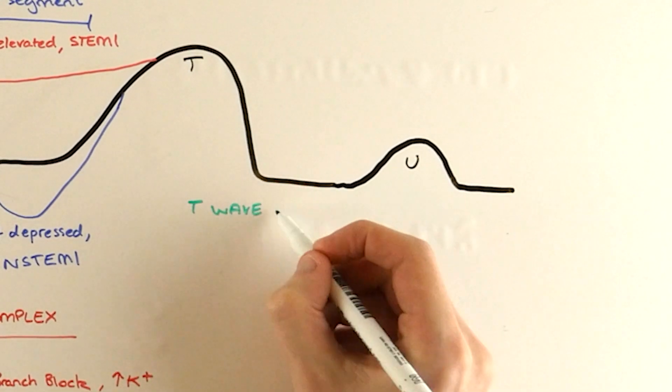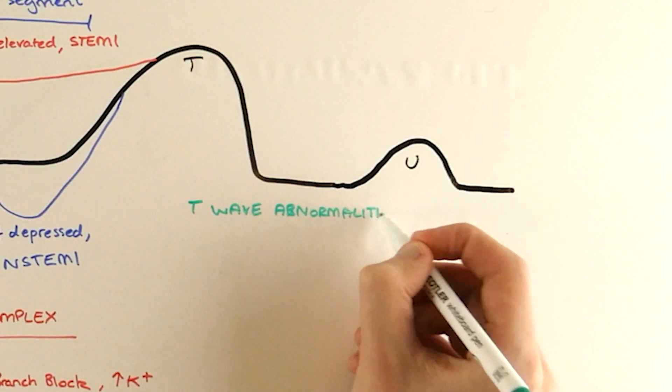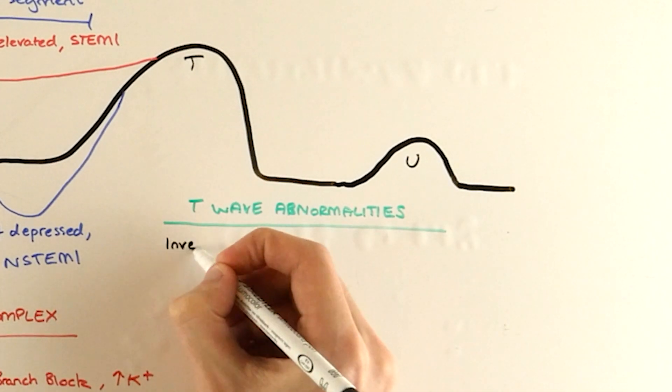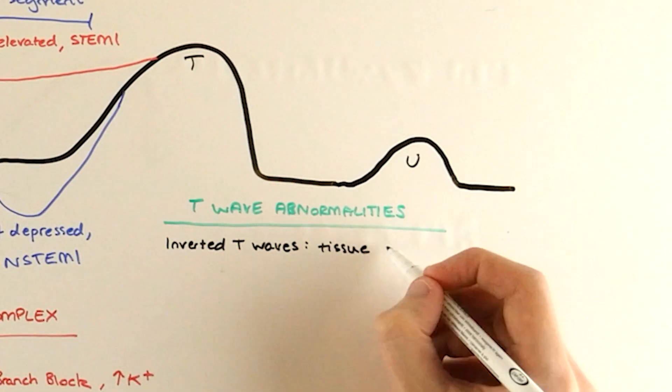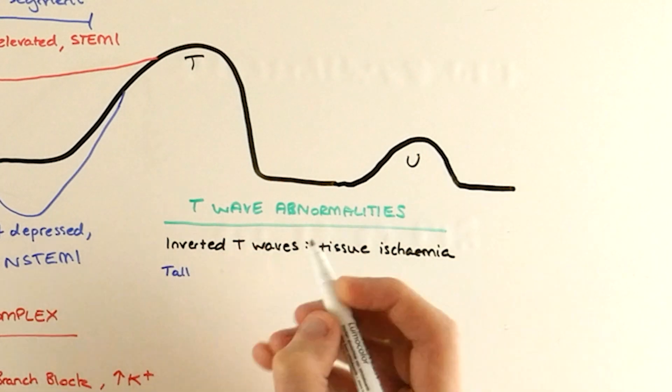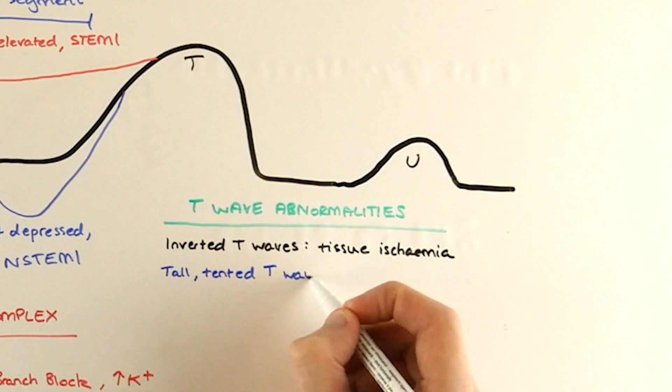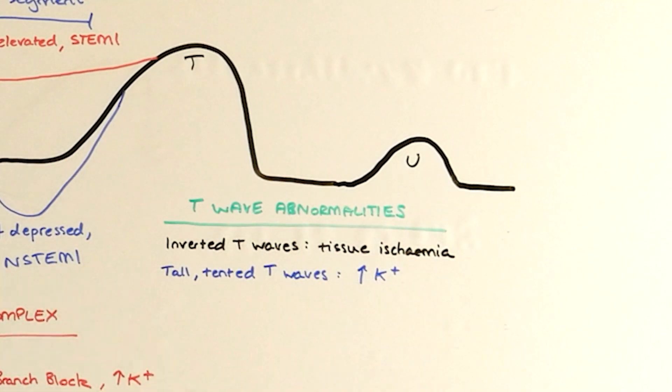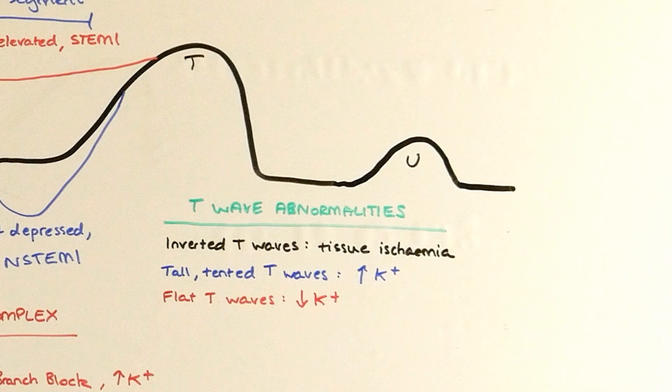Lastly, the T waves. There are only three things to know about them. Inverted T waves are often associated with tissue ischemia, while flattened T waves are linked to hypokalemia, just like big P waves are. And the opposite, hyperkalemia, once more too much potassium, is classically associated with tall, tented T waves.